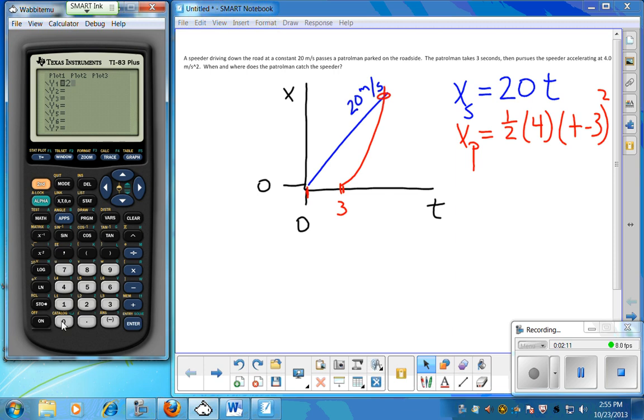So I'm going to type in 20 and then the variable button on the calculator. If you come down two from the top left, come over two and down two, there's a button that says X, T, theta. That's your variable button. You hit that. That's my first equation and then I hit enter. And my second equation, I'll go ahead and take half of four which is going to be two, and then make sure you get the parentheses, variable minus three, and then quantity squared. So I've got my two equations into the calculator.